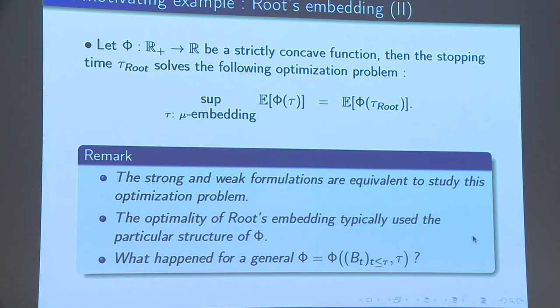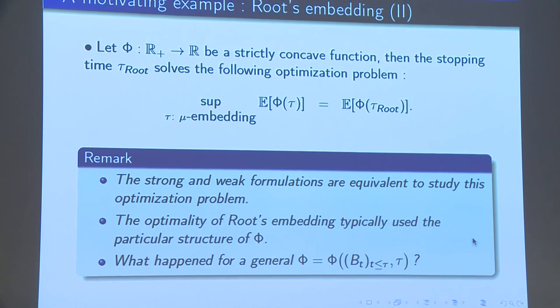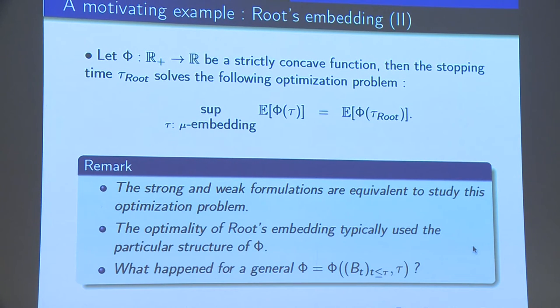But however, it is natural to ask, if we consider some non-Markovian functional phi, I mean path dependent of this form, could we study systematically this optimization problem? And we wonder whether the optimization problem given under the different formulations, means the strong formulation and the weak formulations are equivalent in general. And moreover, we wonder whether we may construct for a general function phi as an optimizer. If not, can we derive some characterization for this optimizer?